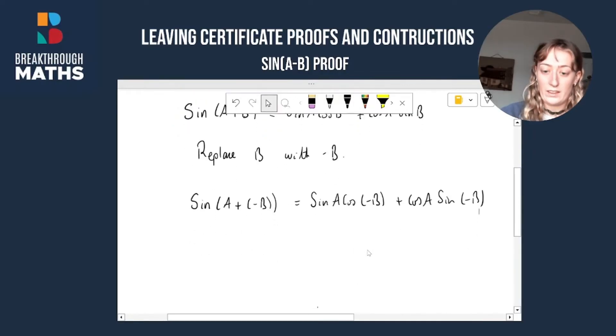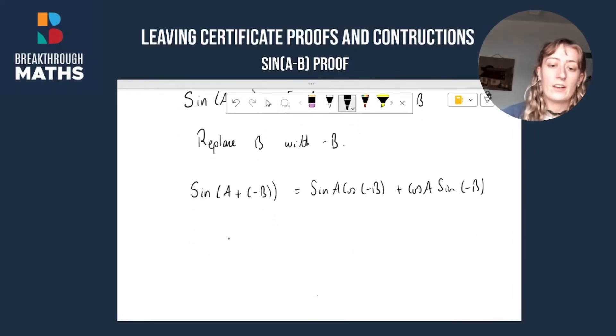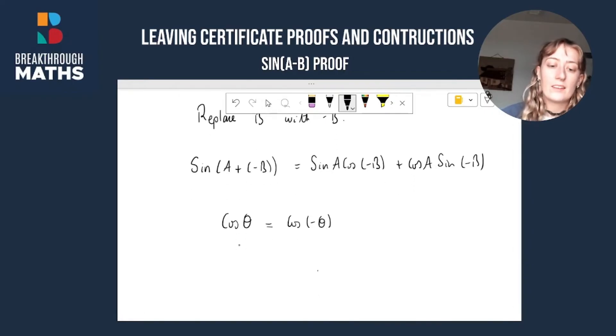Now we're going to make use of the fact next, okay, that cos theta, with theta as any angle, is equal to cos of minus theta. So like cos of 90 is equal to cos of minus 90. We're also going to use the fact that sine of minus theta is equal to minus sine theta. So the sine of a negative angle is equal to the negative of sine of the positive angle.